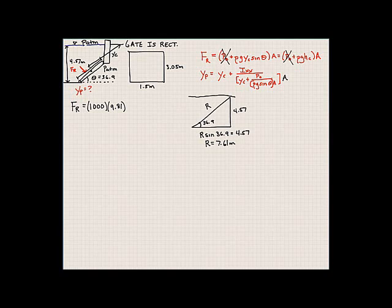So what is Y_C? Well, we know the height of the gate here. This height is 3.05 meters, which means that this has to be 4.56 meters. So Y_C is going to be 4.56 plus 3.05 divided by 2. This comes out to be 6.09 meters. So this is Y_C.